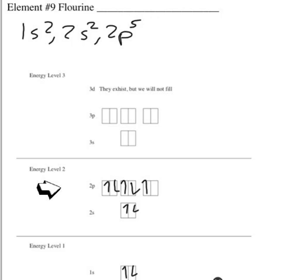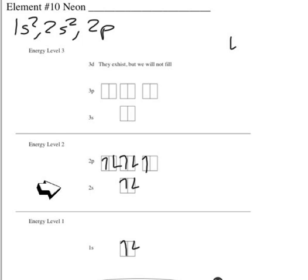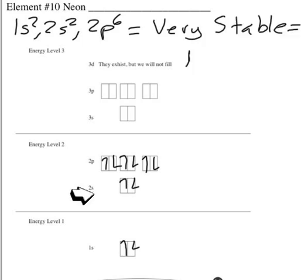Neon, number 10, we need 10 electrons. So we fill up our bottom ones first, 1s² 2s², then 2p⁶. So we say, because this two p and two s orbitals are full, this is a very stable element. You may have heard that the noble gases, the neon, argon, etc., are very stable. And it has a lot to do with this 2s orbital being full and the 2p orbital being full.